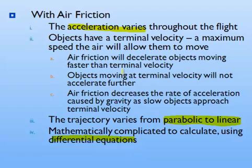Now let's talk a little bit more about that concept of terminal velocity. When you consider air friction, objects have what we call a terminal velocity that is a maximum speed that the air will allow them to move. Any object that's moving faster than terminal velocity will actually slow down. Once an object reaches its terminal velocity, gravity will not be able to accelerate it any faster than it's already traveling.